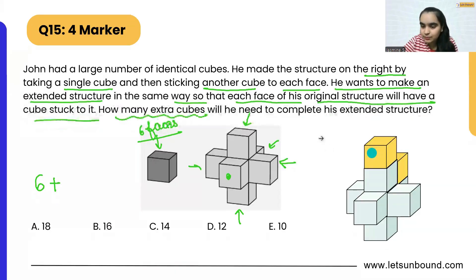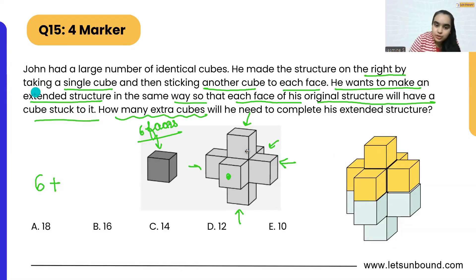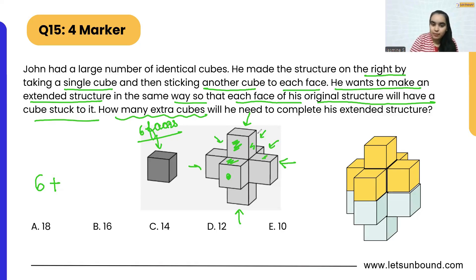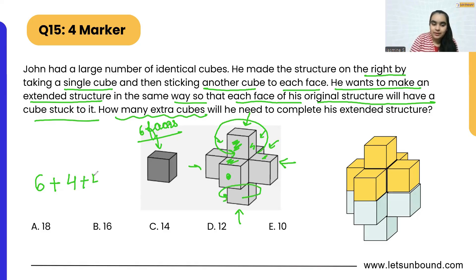Next, if we place cubes along the middle band — each cube placed here covers two faces. So we get one cube here, a second here, a third, and a fourth — four cubes in this area. The same thing happens on the bottom: another four cubes, placed two here and two at the back.